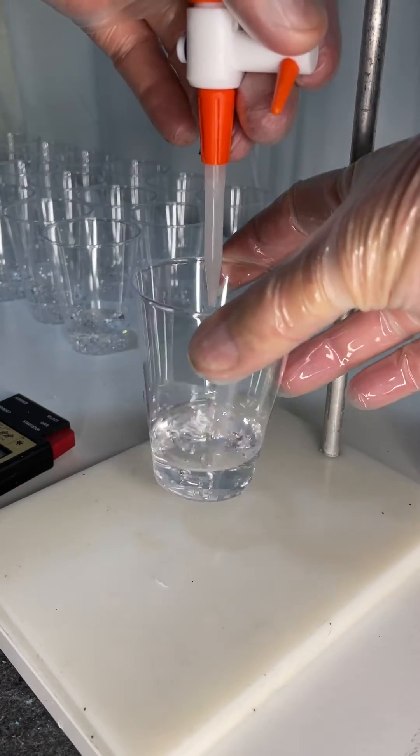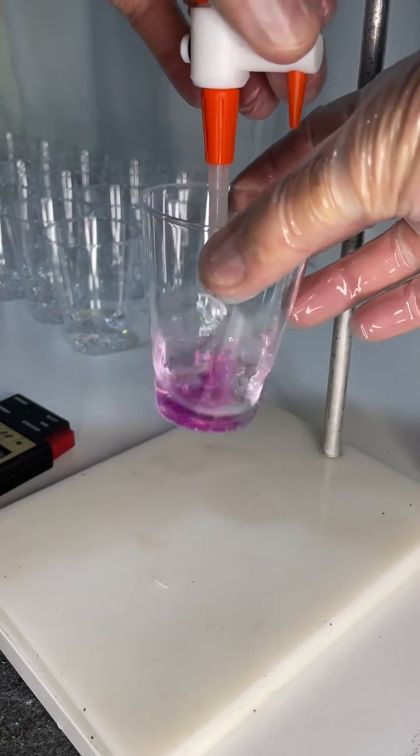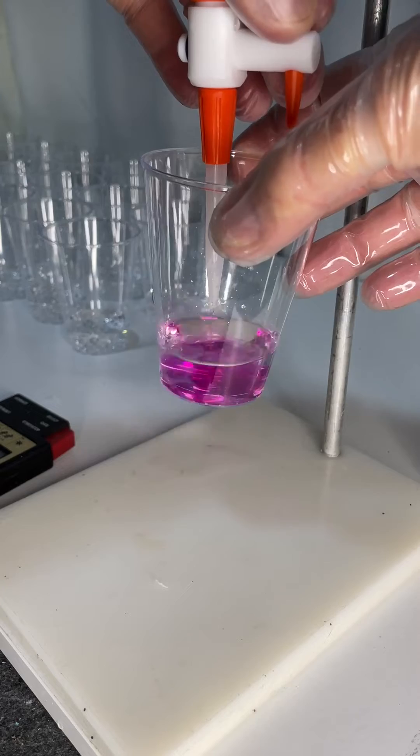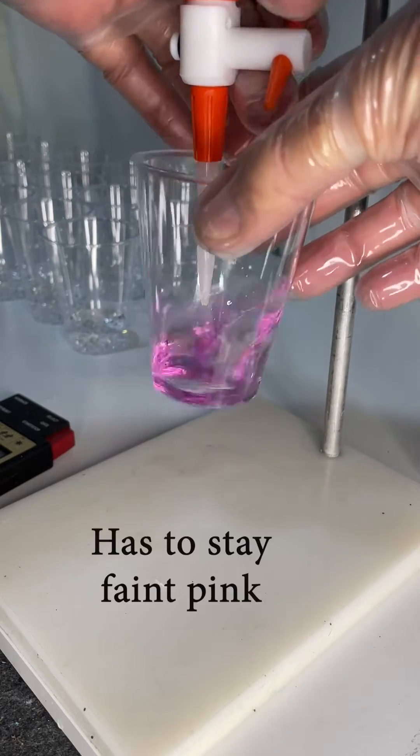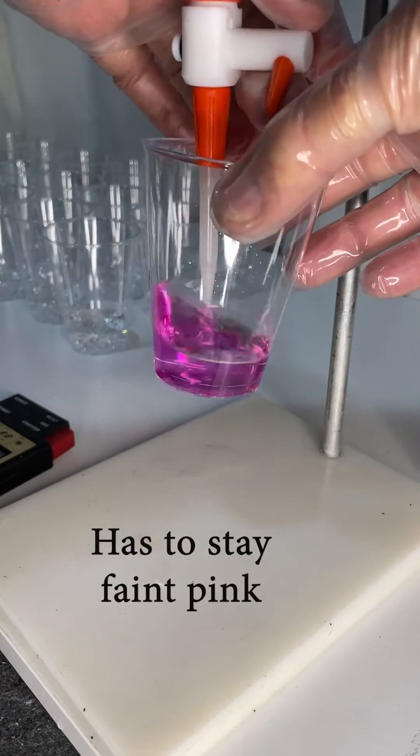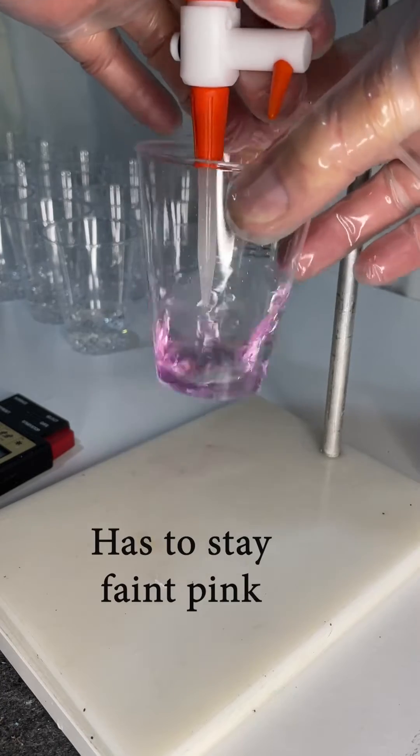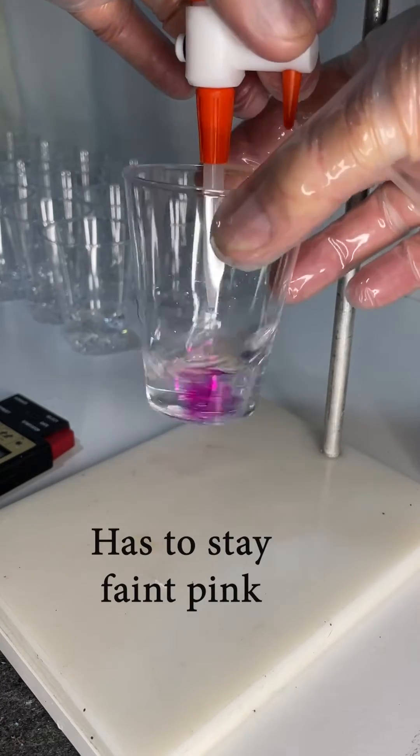In the video you can see I've added phenolphthalein to the container. That's just a plastic cup. I've got sodium hydroxide in the burette. Now at the endpoint you need a faint pink color to last for 30 seconds.